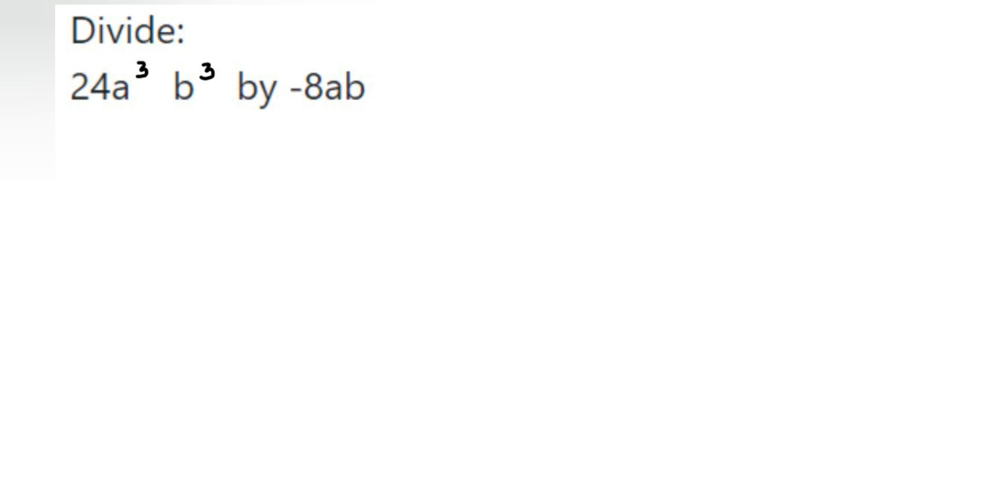Hello everyone, here's a question. The question is divide 24a³b³ by -8ab. We have to simply divide it. There are many ways of dividing it, so let me write down the question once again. So it is 24a³b³ divided by -8ab.